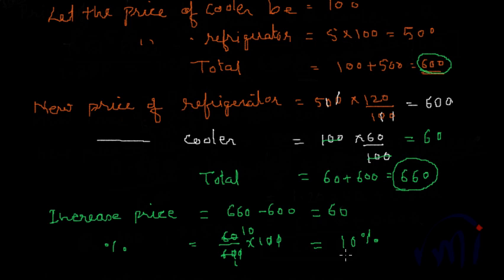Of course, you can assume the price of the refrigerator as 100 and perform these calculations too. You will definitely get the same result, but the calculations will be slightly more difficult. So these are the two methods in which you can solve this problem. I think it was fun understanding these two methods, and after this we will be understanding profit and loss. Bye-bye!